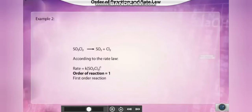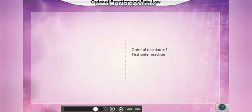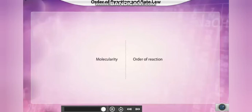Consider another reaction: the formation of sulfur dioxide and chlorine from sulfuryl chloride. As per the rate law, the rate depends on the single power of the reactant sulfuryl chloride, so the order of reaction is one — termed a first-order reaction. The order of a reaction can also be a fraction, as seen in multi-step reactions. For example, the multi-step reaction of acetaldehyde forming methane and carbon monoxide has an order of 3/2.